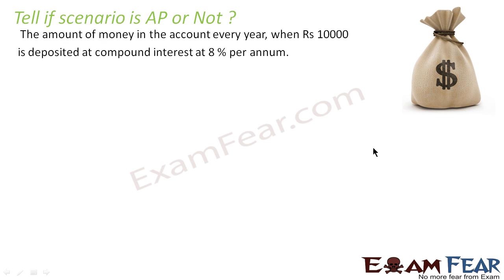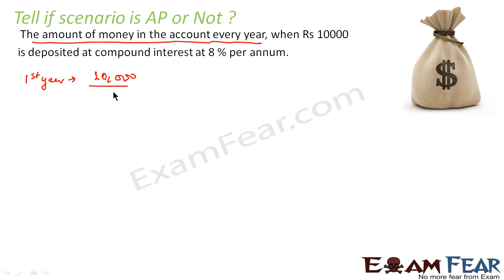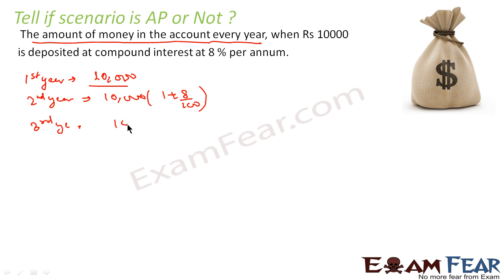Let us take one more scenario: the amount of money in an account every year when 10,000 rupees was deposited at compound interest of 8% per annum. In the first year it is 10,000 rupees. The formula is: total amount = principal into (1 + R/100) to the power T.